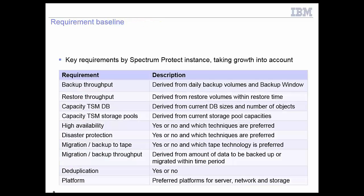We have developed a checklist where you can gather the requirements for each TSM instance. From the client side, we had four of these tables filled out with details for each instance. The requirements are around backup throughput, restore throughput, and daily backup volumes — including the maximum amount of restore within a certain time period — as well as the capacities for the database and storage pools, and high availability requirements. For example, is it going to be a dual-site solution? What kind of self-protection techniques are used? Using this sheet for each Spectrum Protect instance gives you a good baseline.